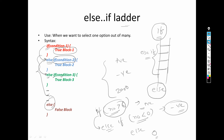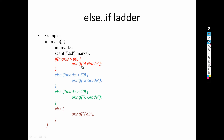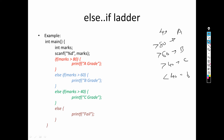In this case there is one if statement, one else statement, and total three possibilities. One possibility is served with if and one with else, so only one else-if is needed. Now let's take a slightly more detailed example with four options: greater than 80 is A grade, greater than 60 is B grade, greater than 40 is C grade, and less than 40 is fail. So total four possibilities are there.